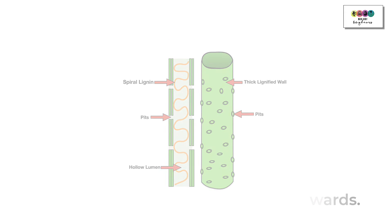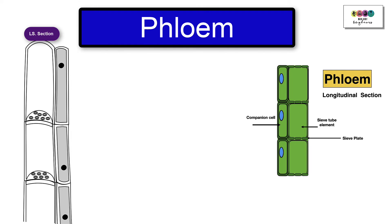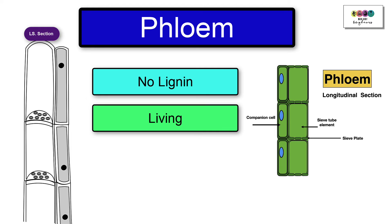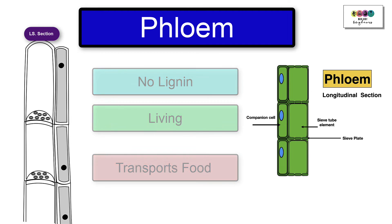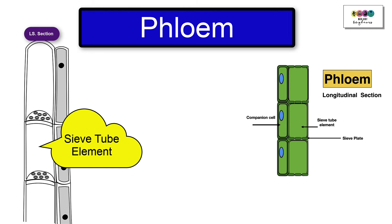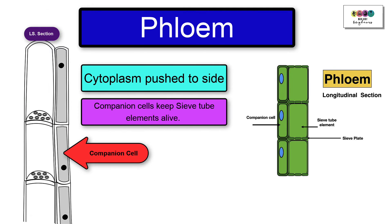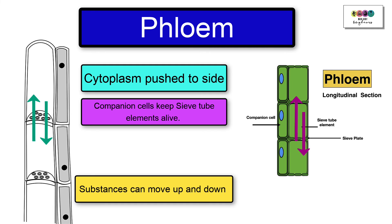So let's move on to phloem, the other vascular tissue. Firstly, it's important to know that phloem does not contain lignin. Phloem is made up of living cells and its function is to transport food. Each cell is known as a sieve tube or a sieve tube element, and within that cell the cytoplasm is pushed to the side. Each one of these has a companion cell which keeps the sieve tube element alive, and substances can move up and down within phloem, within those sieve tubes.